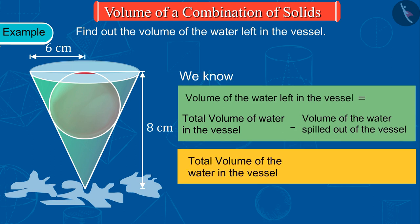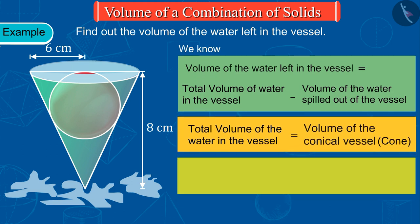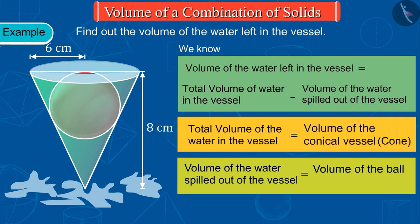Also, the total volume of the water in the vessel will be equal to the volume of the conical vessel, that is the cone, and the volume of the water spilled out of the vessel will be equal to the volume of the ball, that is the sphere.